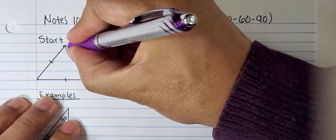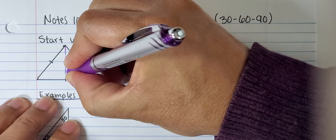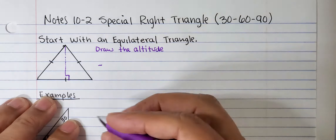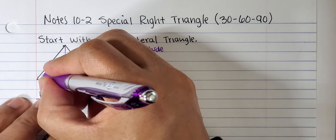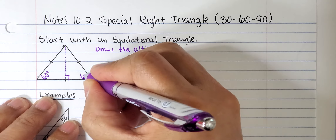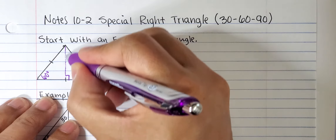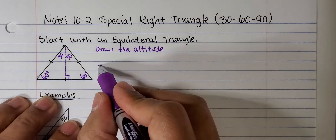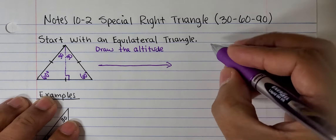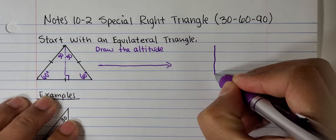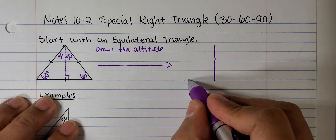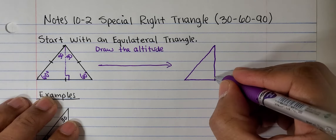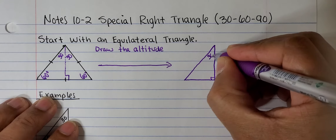I'm going to start with an equilateral triangle and then draw the altitude. This altitude is going to cut this side in half — it's going to bisect this side. As you know, if a triangle is equilateral then all angles measure 60 degrees, but this angle here is being bisected by the altitude, so this angle is 30 degrees and this one is also 30 degrees. Taking just half of this equilateral triangle, we end up with a special right triangle.